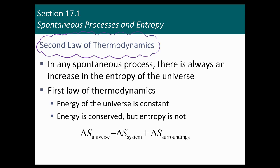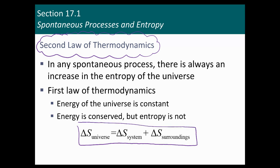The first law was the law of conservation of energy — energy can't be created or destroyed, it can be interconverted. The second law is that in a spontaneous process, there's always an increase in the entropy of the universe. So here's our equation: delta S of the universe equals delta S of the system plus delta S of the surroundings.